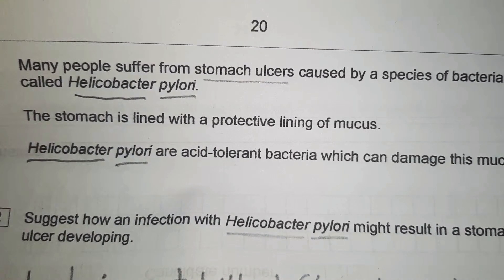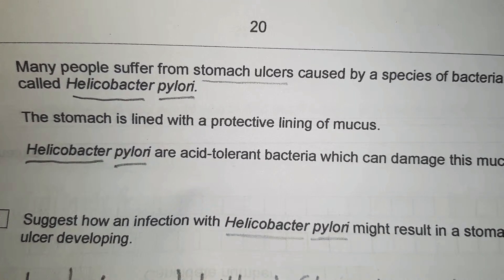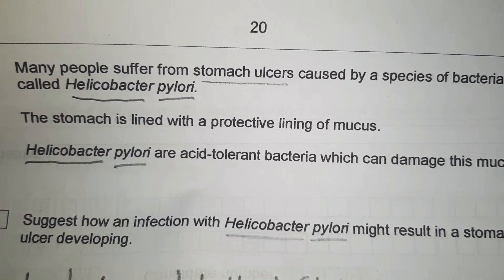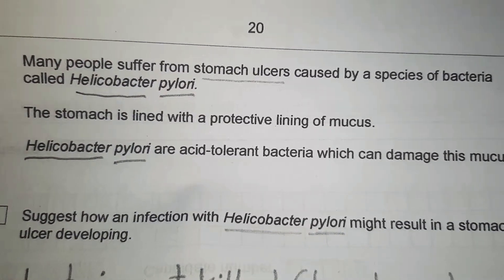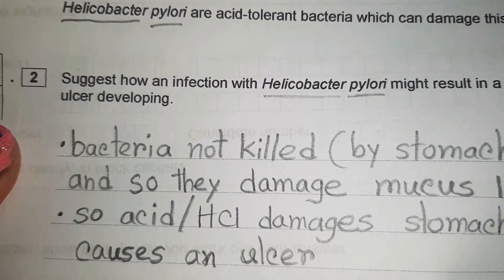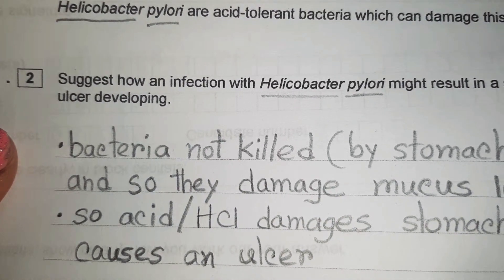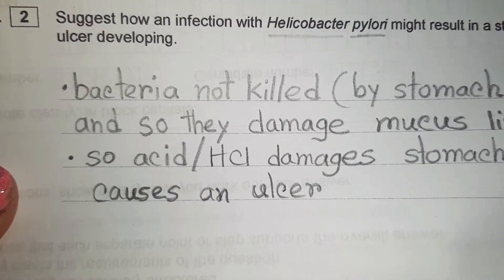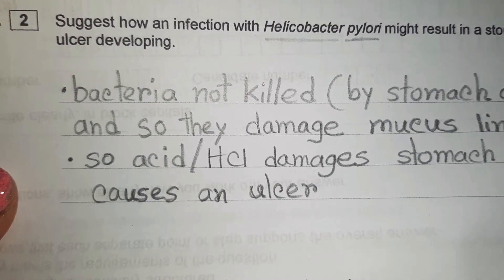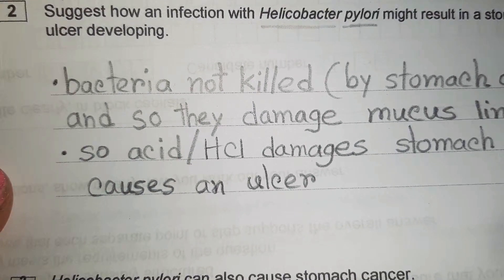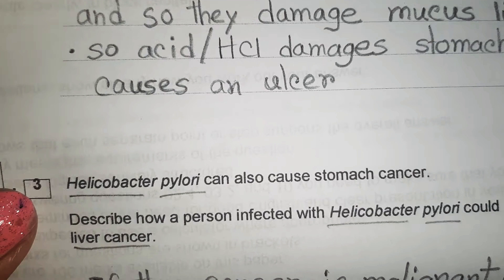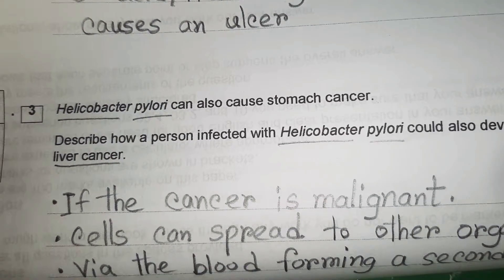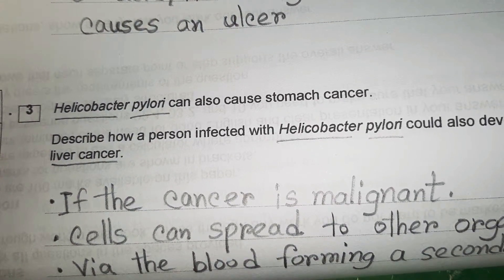Many people suffer from stomach ulcers caused by a species of bacteria called Helicobacter pylori. The stomach is lined with a protective mucus lining. Helicobacter pylori are acid-tolerant bacteria which can damage this mucus lining. Question 6.2: the bacteria are not killed by stomach acid (hydrochloric acid), so they damage the mucus lining, and then the hydrochloric acid damages the stomach tissue, causing an ulcer.